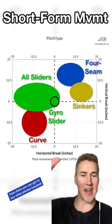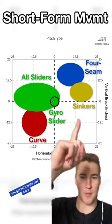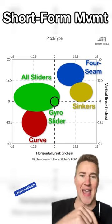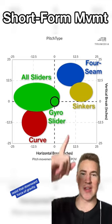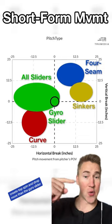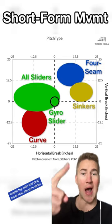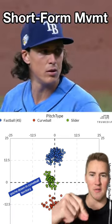From there, you can get to any other pitch in baseball. You get behind the ball more, create backspin, resist that downward force of gravity, and you end up in four-seam territory. Create topspin and drop more than the gyroslider, and you're down in curveball territory.